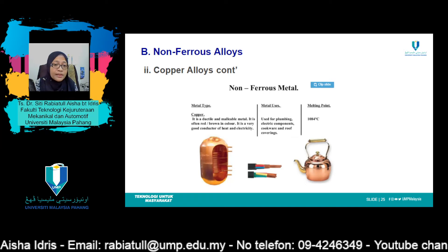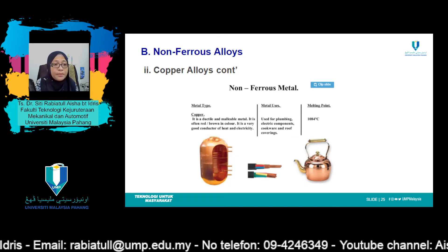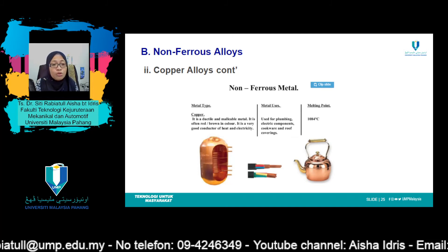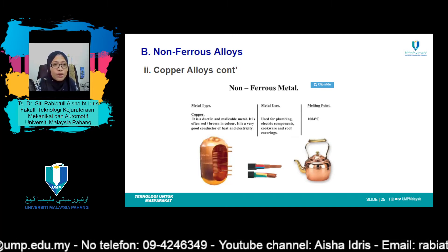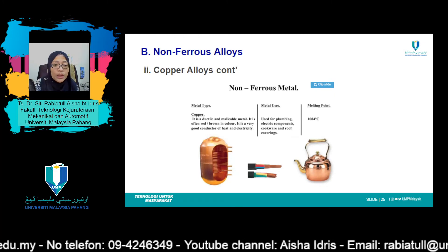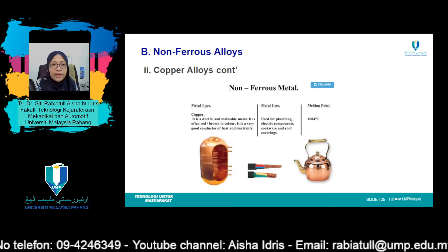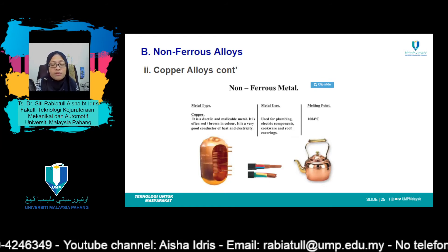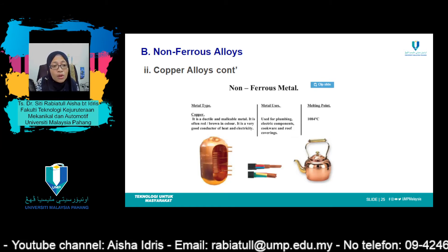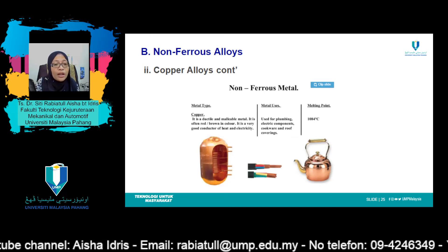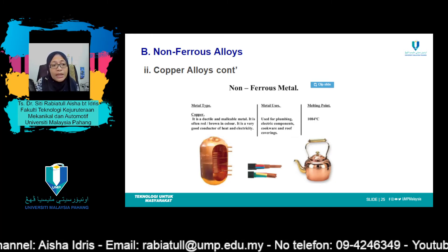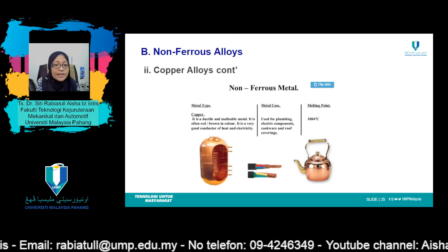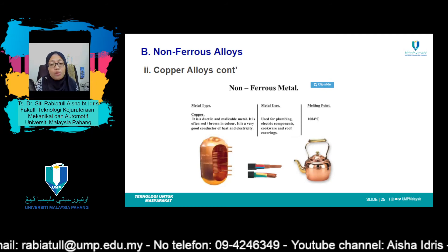The most common copper alloys are brasses, for which zinc as a substitutional impurity is the predominant alloying element. Some common brasses are yellow brass, naval brass, cartridge brass, and gilding metal. Applications include costume jewelry, cartridge casings, automotive radiators, musical instruments, electronic packaging, and coins. Bronzes are alloys of copper and several other elements including tin, aluminum, silicon, and nickel. These alloys are somewhat stronger than the brasses yet still have a high degree of corrosion resistance.